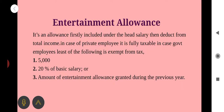Which are the limits? First: Rs. 5000. Second: 20% of salary. Third: the actual amount of entertainment allowance granted during the previous year. Basically, 20% of salary or Rs. 5000, whichever is less, will be claimed as deduction. The least of these three amounts is exempted, and the rest is considered the taxable portion of entertainment allowance.